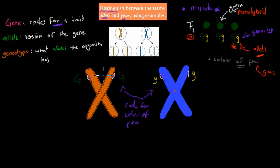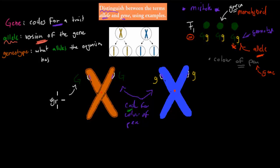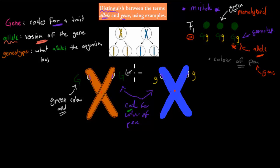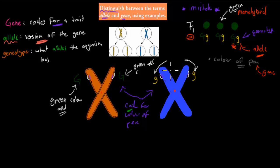Even though all the same parts code for the colour of the pea, we still haven't determined what colour they actually code for. The allele is just a version of the gene — a different version. So all the same parts always code for the colour, but this part would code specifically for green colour, so it has the green allele. Big G is the dominant green allele. This one had the recessive allele, coding for the yellow colour.